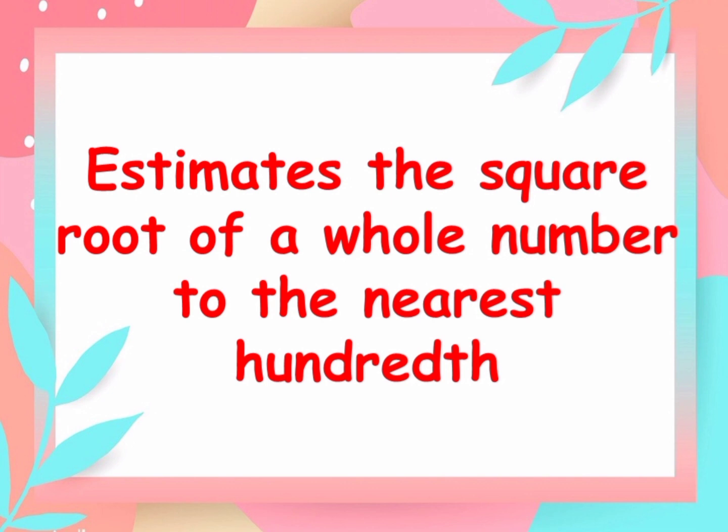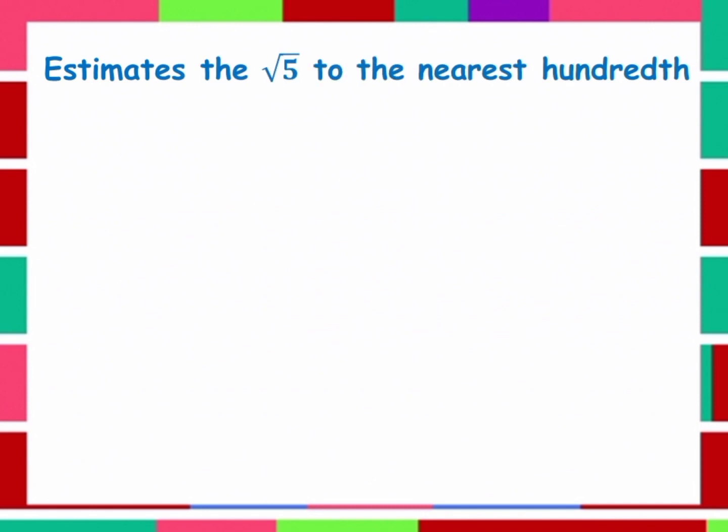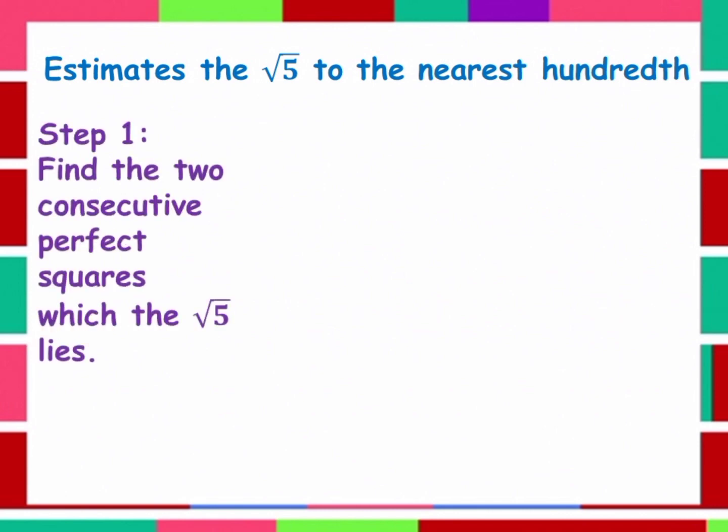Hello everyone. In this video, I'm going to teach you how to estimate the square root of a whole number to the nearest hundredths. For example, we are going to estimate the square root of 5 to the nearest hundred. The first step is to find the two consecutive perfect squares between which the square root of 5 lies.